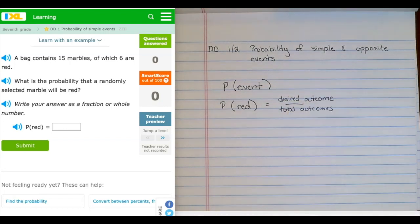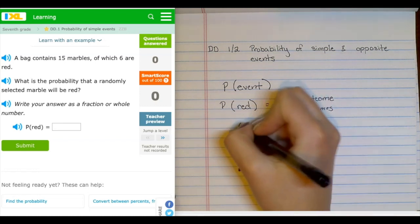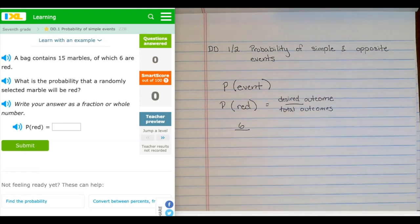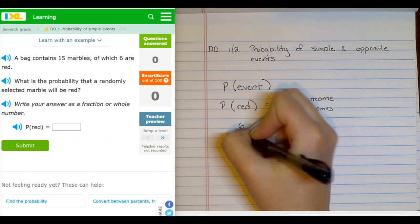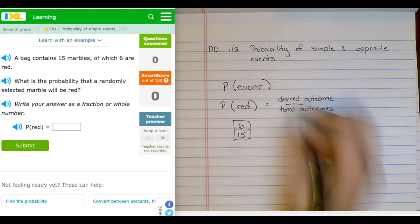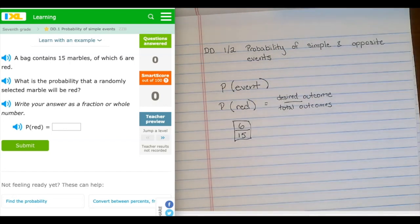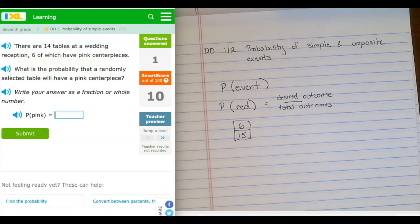So in this case, the desired outcome is what is the probability that it will be red? So desired outcome would be red, which there are six of them, and the total outcomes are all of the marbles in the bag. There are 15, and so my answer is simply 6 over 15. So the probability of that red marble is 6 over 15.